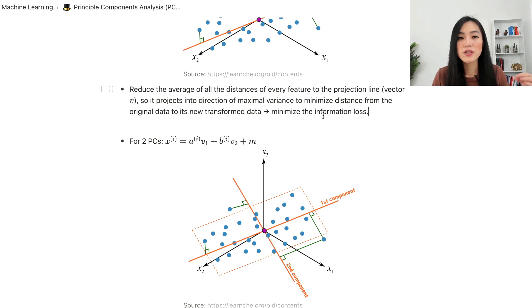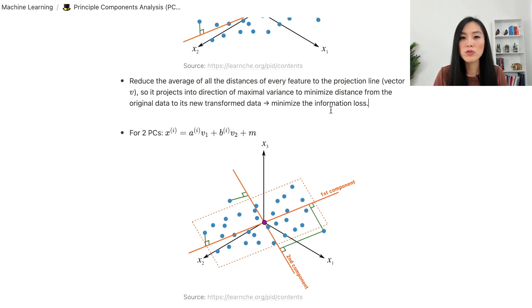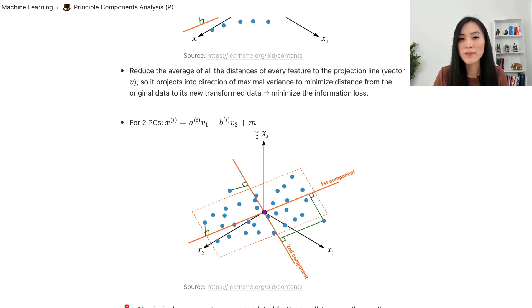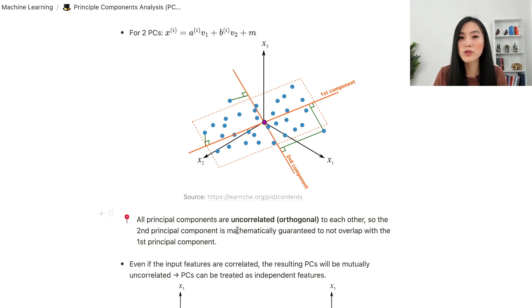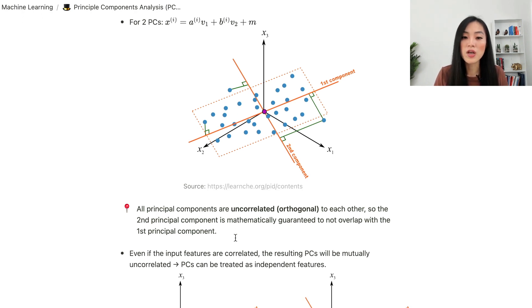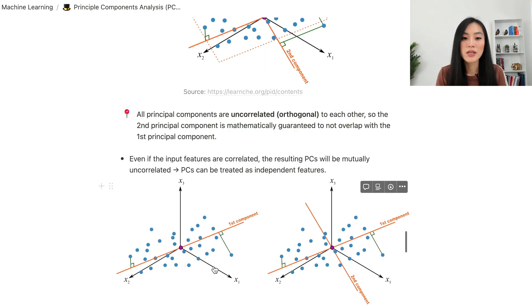In the high-dimensional case with multiple principal components, if we have two principal components, then xi equals aiv1 plus biv2 plus m, where m is the error term. As shown in the diagram, the second principal component is orthogonal to the first one. This applies to all principal components — they are all uncorrelated or orthogonal to each other. So even if the input features are correlated, the resulting principal components will be mutually uncorrelated and can be treated as independent features.